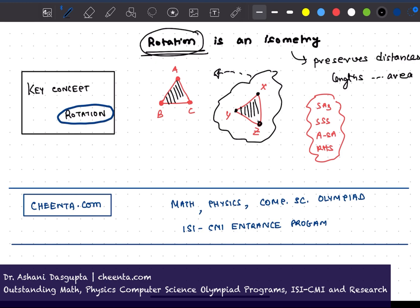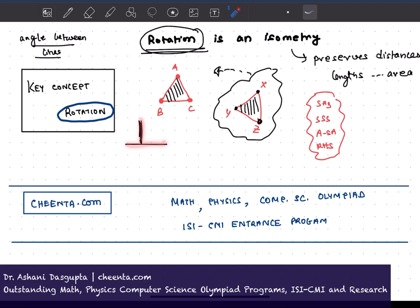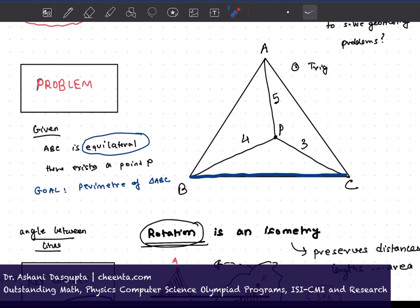It's also used to show angle between certain figures, angle between lines. For example, if you want to show that two lines are perpendicular to each other, one way to do it is that you just take the line, rotate it by 90 degrees, and if it exactly falls on the other line, then the two lines are at 90 degrees to each other. So rotation has variety of applications. If you are into complex numbers and geometry, rotations are very useful there.